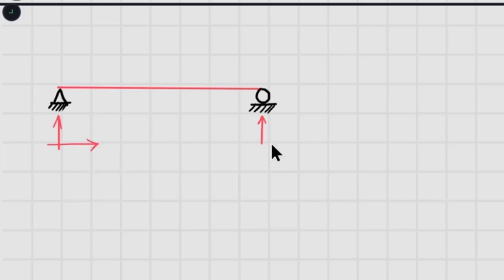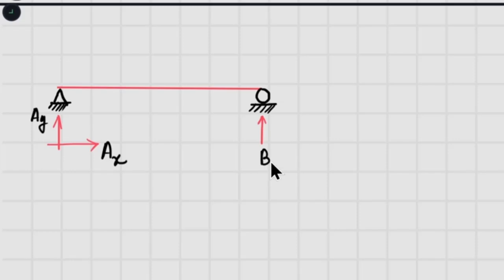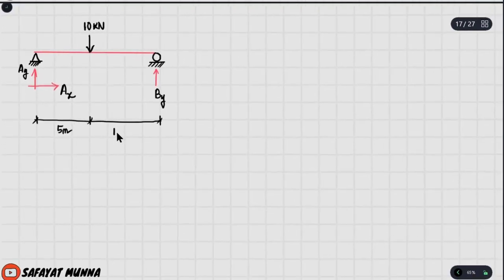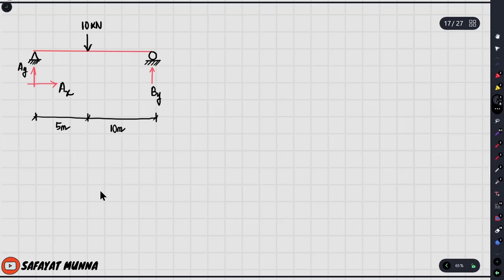We assume reaction directions first: Ax in the right direction, Ay in the upward direction at the pin, and By in the upward direction at the roller. There is a load of 10 kilonewtons applied on the beam, with general dimensions of 5 meters from the pin to the load and 10 meters from the load to the roller, giving a total span of 15 meters.